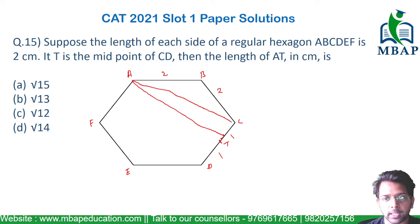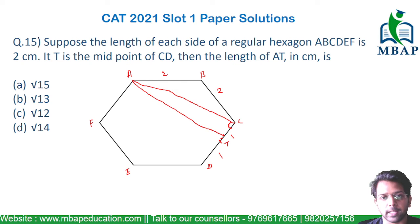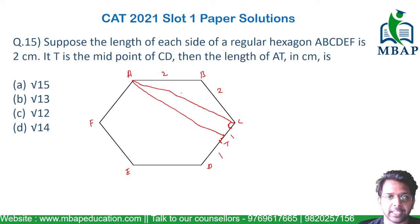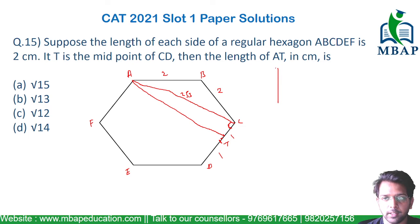Let's find the length of AC. Triangle ABC is an isosceles triangle where AB = 2 and BC = 2. Applying the sine rule, we can find AC. AC will be 2√3 — so AC equals 2 root 3.